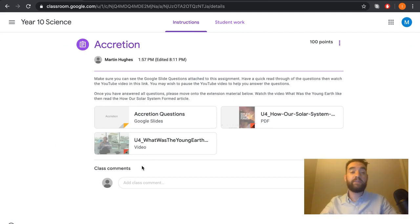Make sure you can see the Google slide questions attached to this assignment. That's this part here. You should see Accretion questions, and these are the Google Slides. Have a quick read through the questions, then watch the YouTube video in this link, which you're doing right now. You may wish to pause the YouTube video to help you answer the questions.